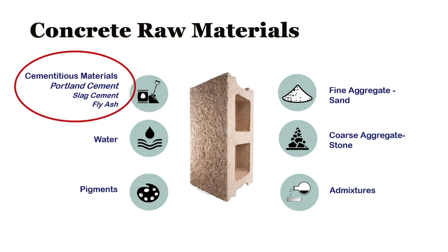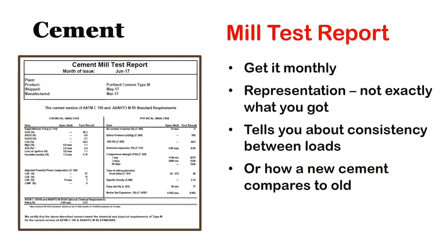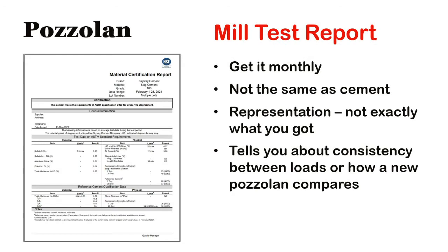Now let's talk about cement. The first thing you want to do is get a mill test report, or mill cert, on a monthly basis. Mill certs contain chemical and physical analysis of the cement. They are a snapshot and represent a large quantity of cement produced over a month's time, so they may not be exactly what you got in any particular load. Mill certs are most valuable to see how consistent the cement is over time, or to get an idea of how a new cement might compare to your current supplier. ACM can help you decipher all the information on your mill cert. Pozzolans, like fly ash or slag, also have mill test reports — they usually have less chemical information but may contain other information like strength activity index, and are most valuable for comparison purposes.